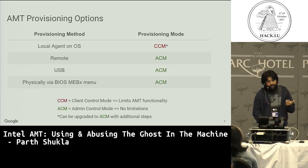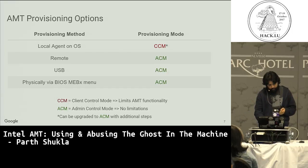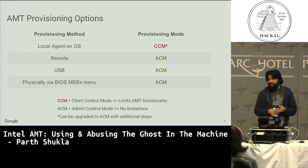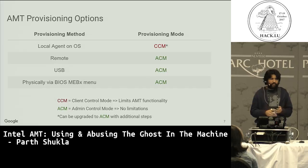A third option is USB provisioning: create a setup.bin file, put it on a FAT32 USB, and configure AMT at boot time — just plug it in, boot, configured. Finally, you can provision via the BIOS MEBX menu using Ctrl-P at reboot, then go through the BIOS menu. This is about 10 easy-to-follow steps that takes roughly 30 seconds.